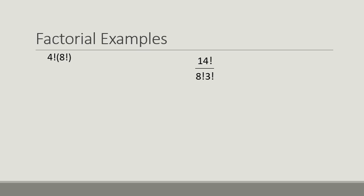So for example, I've got this 4 factorial is 4 times 3 times 2 times 1, and then times 8 factorial is 8 times 7 times 6 times 5 times 4 times 3 times 2 times 1.